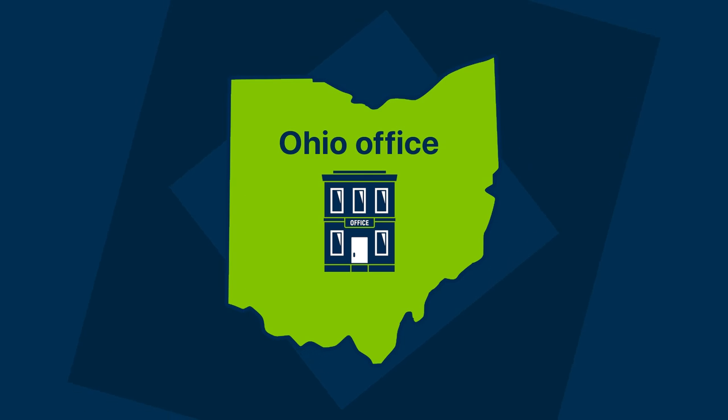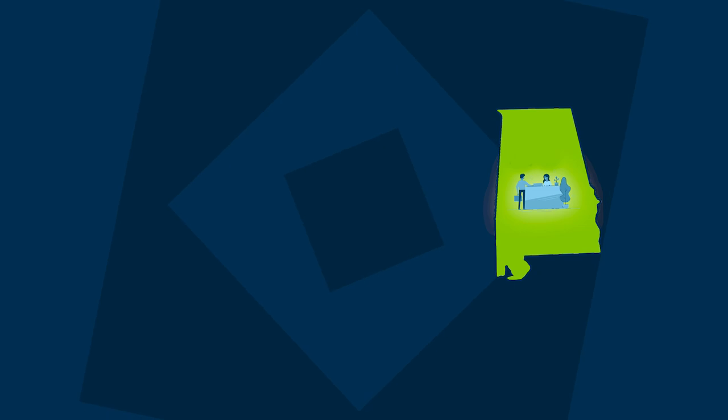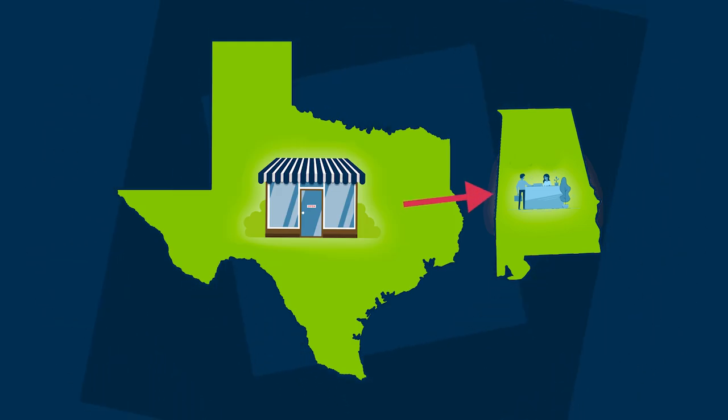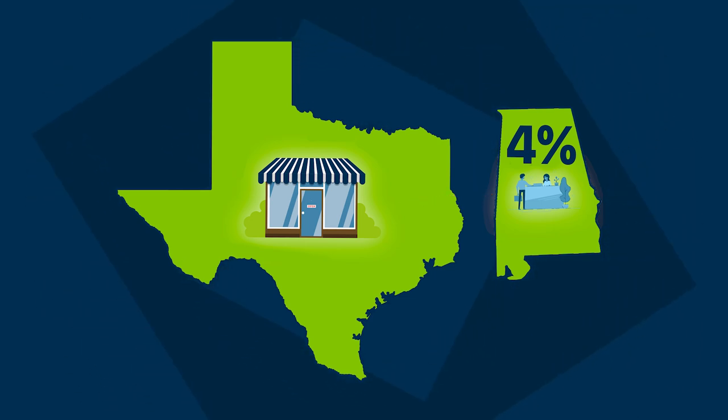Now let's change the scenario. Let's say you have a satellite office in Ohio — that means you have physical nexus in Ohio. When you ship products to customers in Ohio, you must pay the Ohio combined tax. To be clear, it's technically the customers who pay it; you collect it and then remit it to the state of Ohio. Now let's say you have an employee in Alabama even though your primary operation is in Texas. When you sell products to customers in Alabama, you must collect sales tax because you have physical nexus in Alabama.